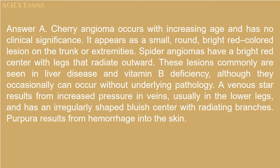Answer A. Cherry angioma occurs with increasing age and has no clinical significance. It appears as a small, round, bright red-colored lesion on the trunk or extremities. Spider angiomas have a bright red center with legs that radiate outward and are commonly seen in liver disease and vitamin B deficiency. A venous star results from increased pressure in veins, usually in the lower legs, and has an irregularly shaped bluish center with radiating branches. Purpura results from hemorrhage into the skin.